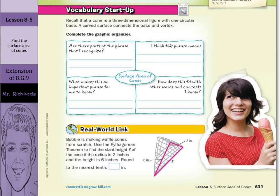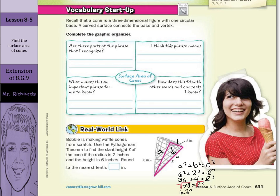Well, the Pythagorean theorem is A squared plus B squared equals C squared. Remember, your legs A and B are around your right angle, and your hypotenuse C is across from the right angle. So when we make our substitutions in, we'll have 6 squared plus 2 squared equals L squared. 6 squared is 36, 2 squared is 4, equals L squared. 36 plus 4 is 40, equals L squared. And if we take the square root of both sides, our result will be 6.32, and if we're rounding to the nearest tenth, our solution will be 6.3 inches, since that 2 in the hundredths spot will not round the 3 up.